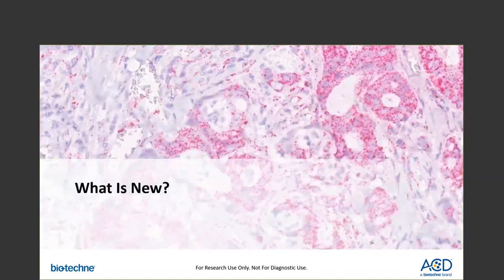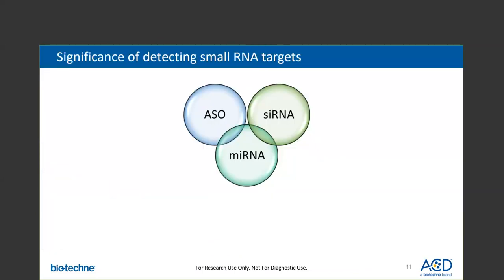So what is this new assay? Before we go into the details, we'll look at the significance of detecting small RNA species. Detection of small RNA species can have significant pathological implications. Specific and sensitive detection of small RNA targets such as ASOs, microRNAs, and siRNAs can be very challenging, as these require unique probes designed against very specific short sequences on the target of interest.